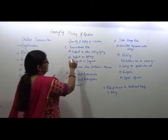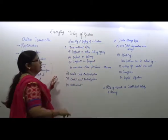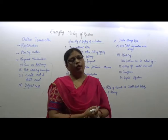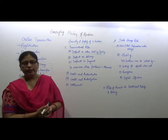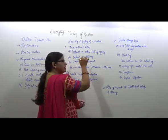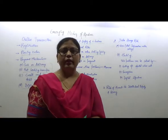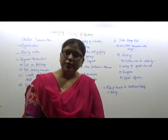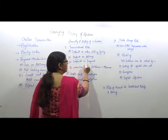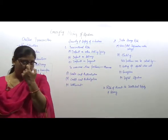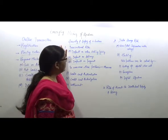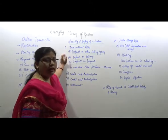The types of transactional risk include: first, default on order taking — when we place our order, a risk can arise at that time. Next is default on delivery — whatever you have ordered may not be delivered correctly. And third is default on payment — where you have not completed the payment. These are the main transactional risks which arise while doing a transaction.